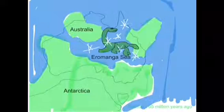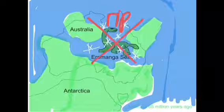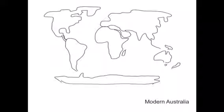65 million years ago, there was a rapid drop in temperature around the world, causing mass extinction. Today, Australia is separated from the rest of the world and has its own continent.